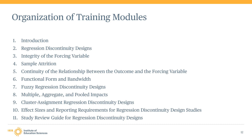The sixth module describes RDD Standard 4, the functional form and bandwidth standard, which requires regression discontinuity design studies to demonstrate adequate specification of functional forms and bandwidths used during impact estimation. The seventh module describes RDD Standard 5, the Fuzzy RDD standard, which is only applicable when reviewing evidence from studies that use fuzzy rather than sharp regression discontinuity designs. The eighth module describes the unique considerations that must be taken into account when reviewing evidence from RDD studies that report multiple, aggregate, or pooled impact estimates. The ninth module describes the unique considerations when reviewing evidence from cluster assignment regression discontinuity design studies.